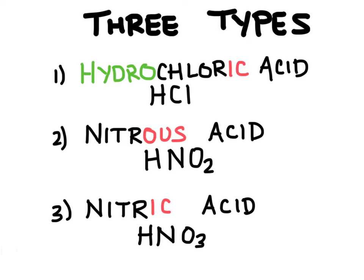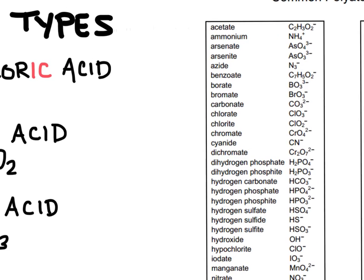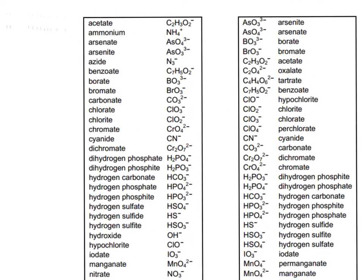We have some that start with hydro and end in ic, ous, and then the third one there, ic. Let's look at how these different types of names come to be.